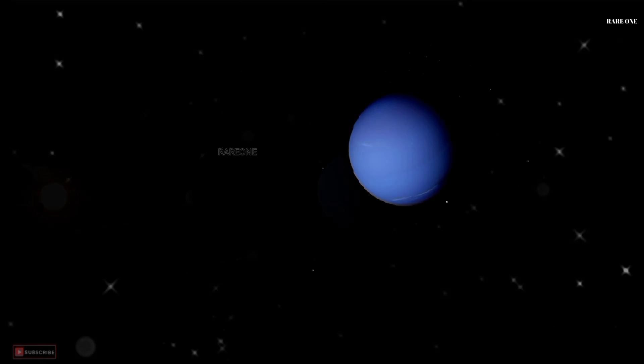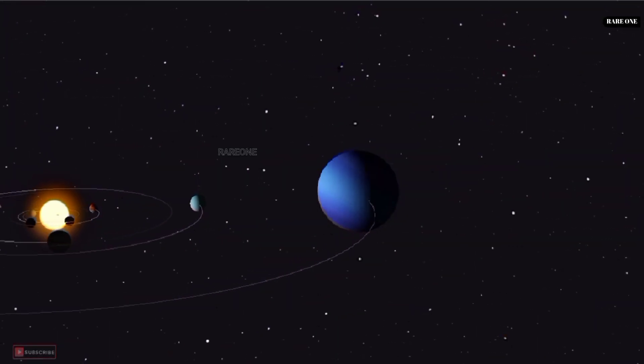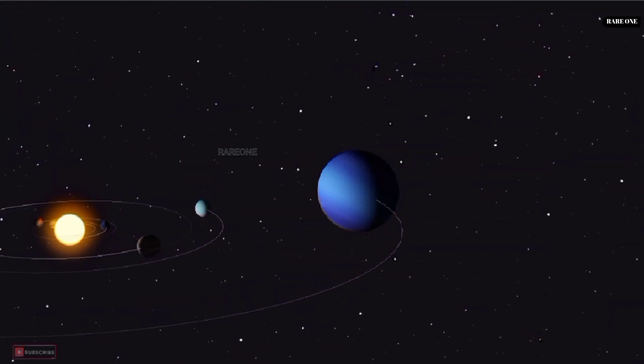Have you ever gazed up at the night sky and wondered about that faint, bluish dot hovering among the stars? That's Neptune, the most distant planet from the Sun in our solar system. Despite its remote location, this ice giant is a fascinating world with many incredible features.